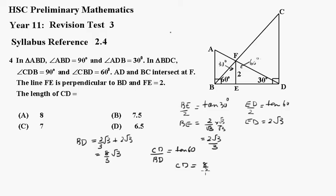which is 8 over 3 root 3 times the tan of 60, which is just root 3. Root 3 by root 3 is 3 and these cancel and you just get 8. The answer was A.